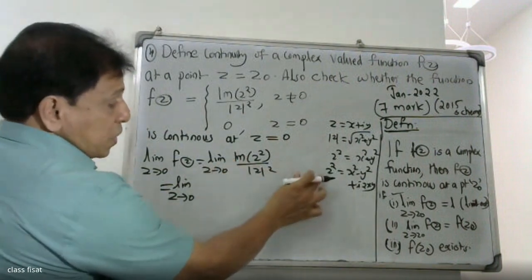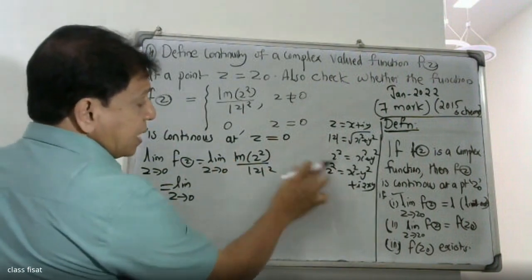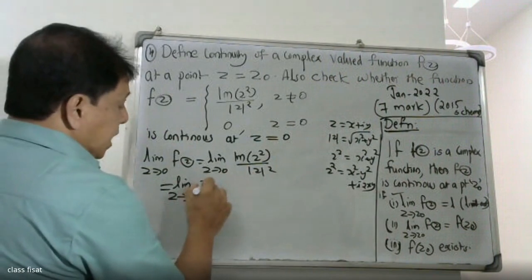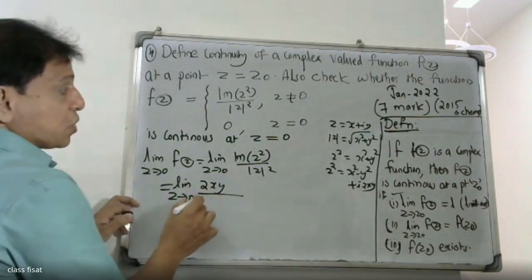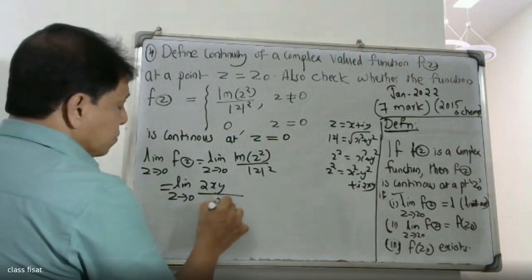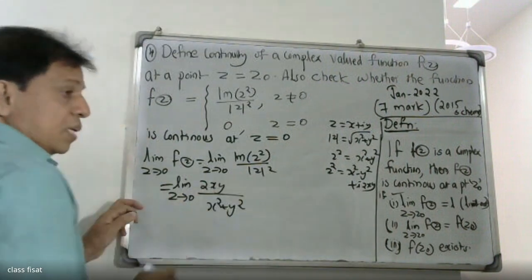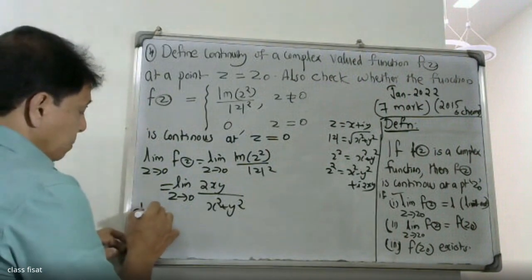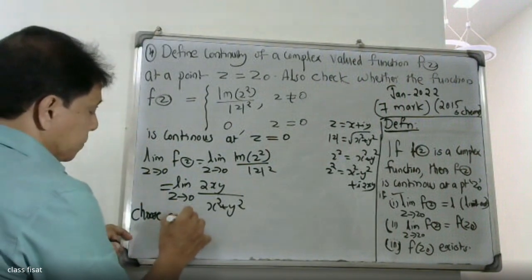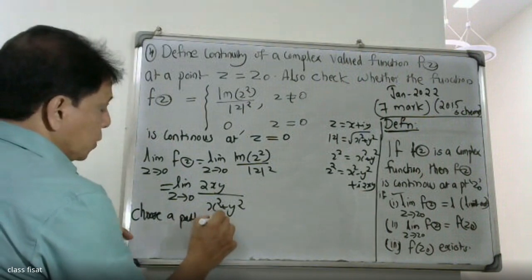The imaginary part of z² is 2xy divided by modulus of z² equals x² plus y². To evaluate this limit, we choose a path y equals mx.